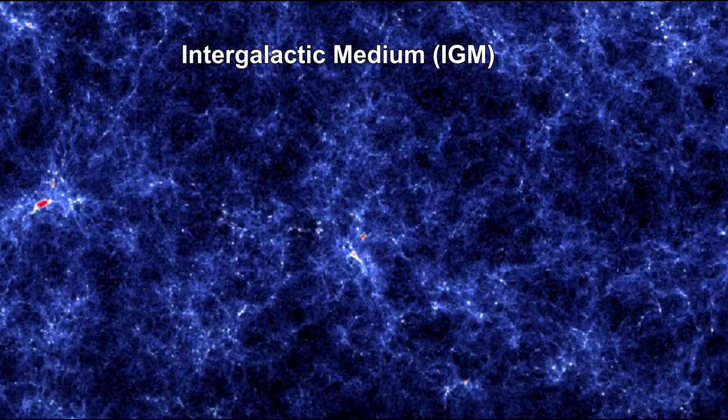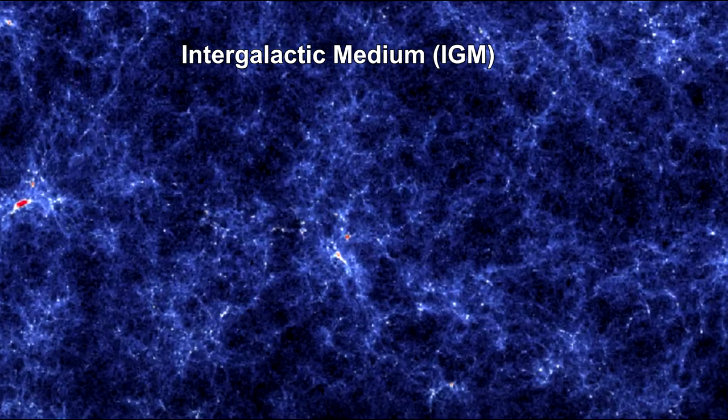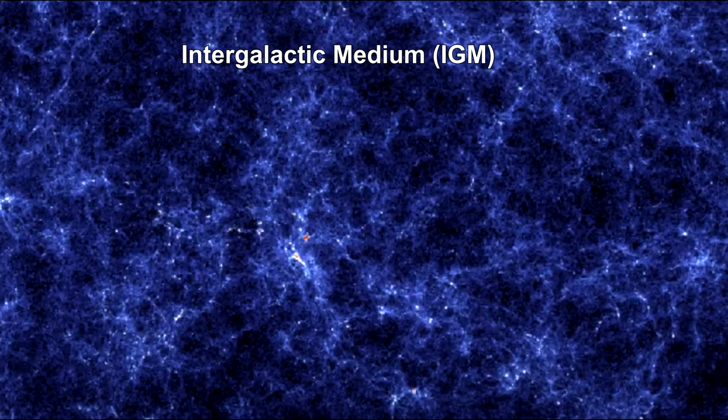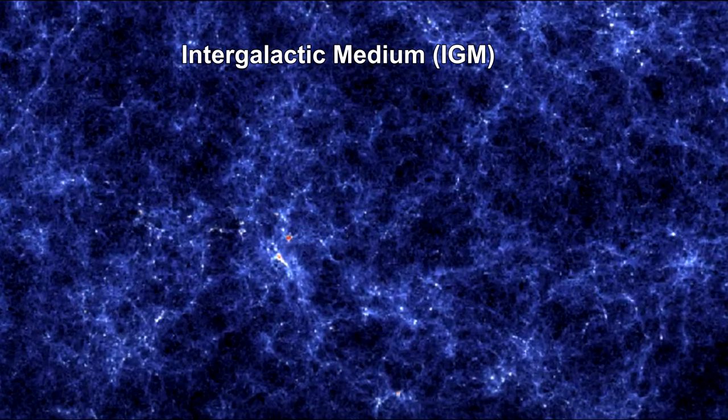But the universe is so vast that this accounts for around half of the total baryonic matter. The other half is in the hundreds of billions to trillions of galaxies that populate the universe.